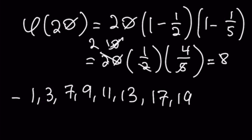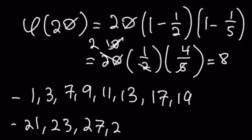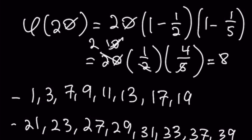We can add any multiple of 20 to all of these to get a second system. So let's add 20 to each to get: 21, 23, 27, 29, 31, 33, 37, and 39. That completes this example, so let's go on to the next one.